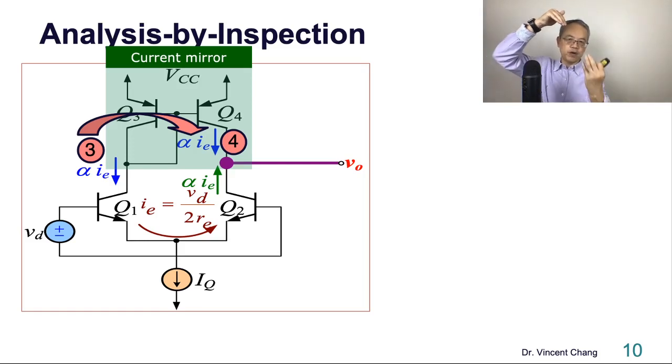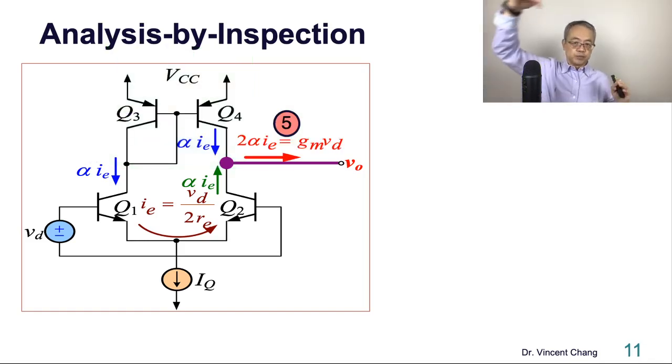Then you have 2 from the bottom and 4 from the top meeting at the purple output node. So green plus 2 plus 4 equals number 5. Number 5, based on the KCL, is the double of alpha IE.